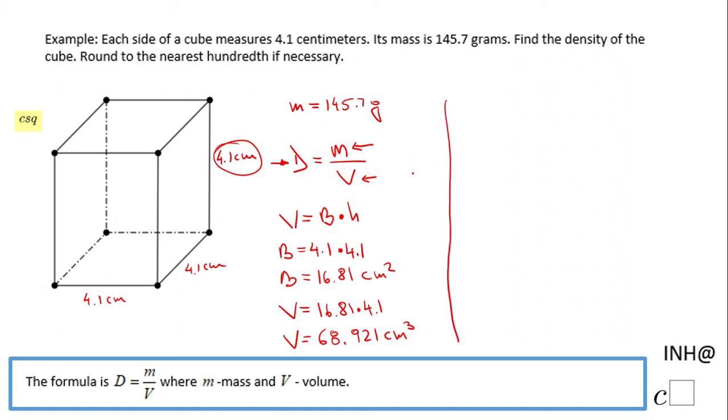We know the mass is 145.7 grams, and now we know the volume is 68.921 cubic centimeters. So we just have to do a simple division.